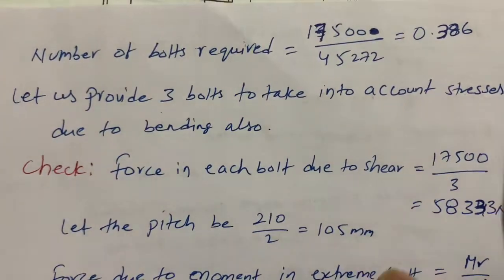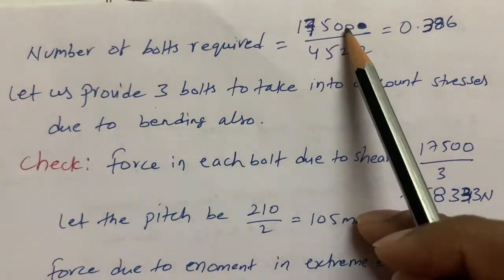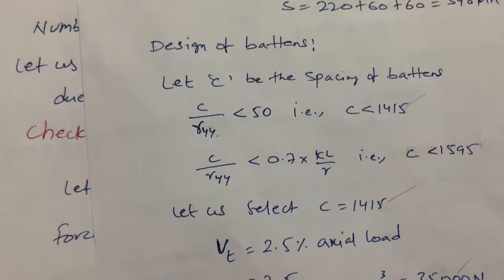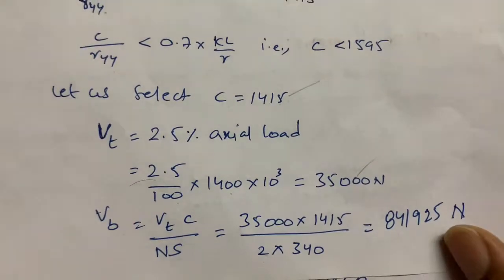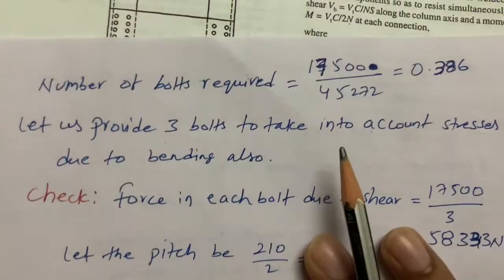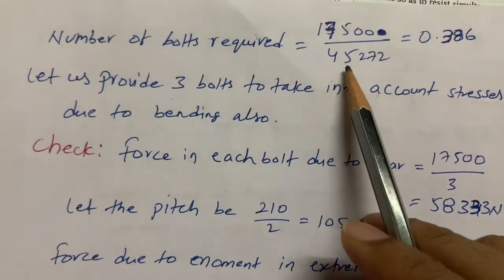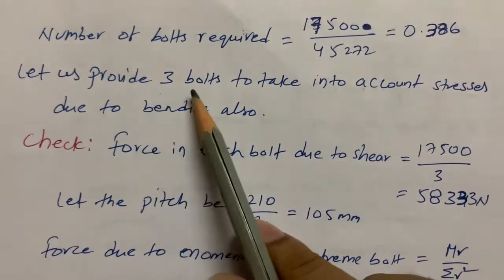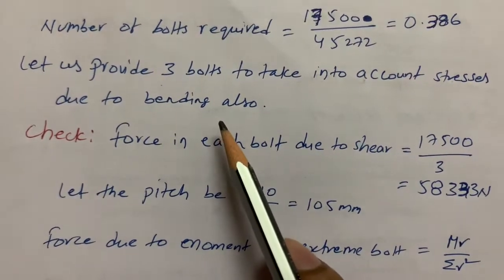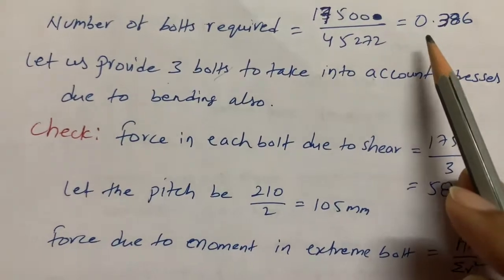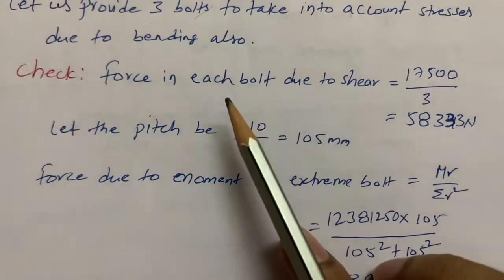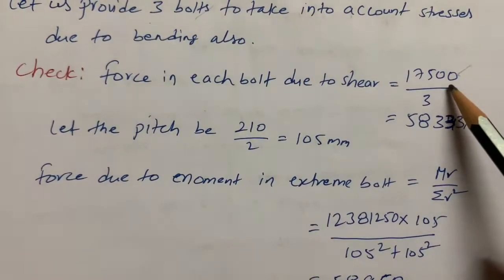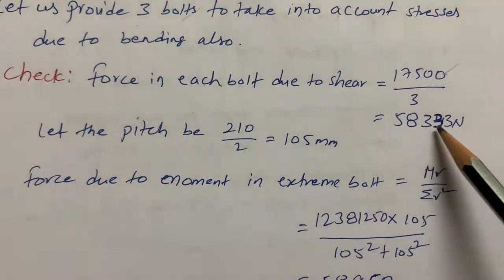To find the number of bolts required, I use 17,500 N — that is V_t = 35,000 N divided equally over 2 sides — divided by the bolt capacity of 45,272 N, giving 0.386. I provide 3 bolts to account for stresses and bending. Force on each bolt due to shear = 17,500 / 3 = 5833.3 N.